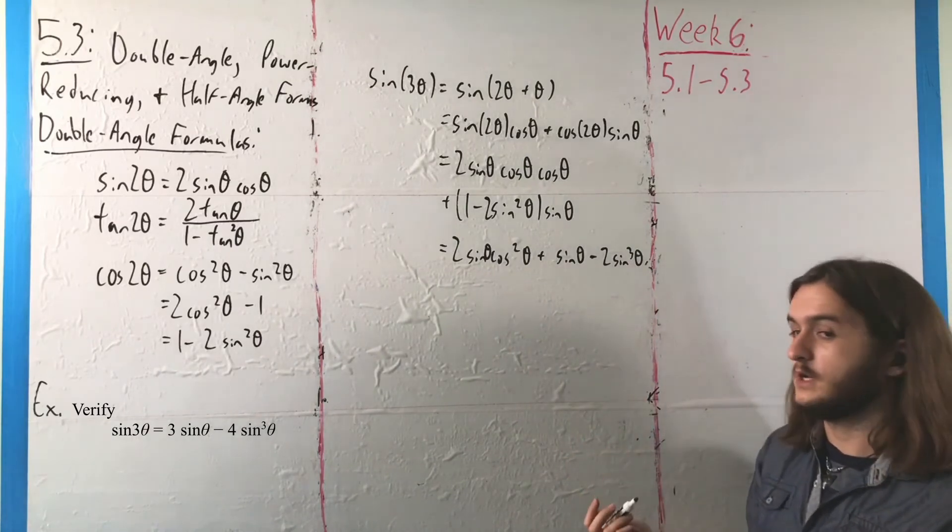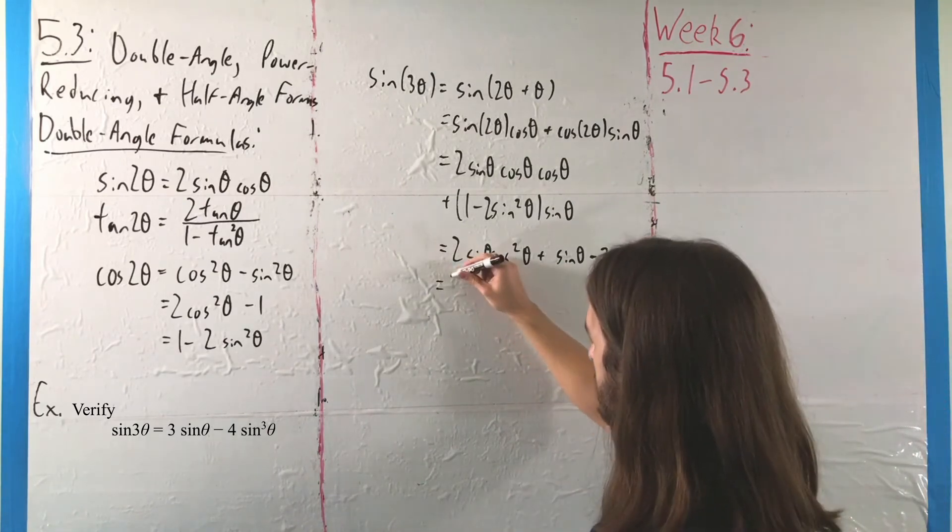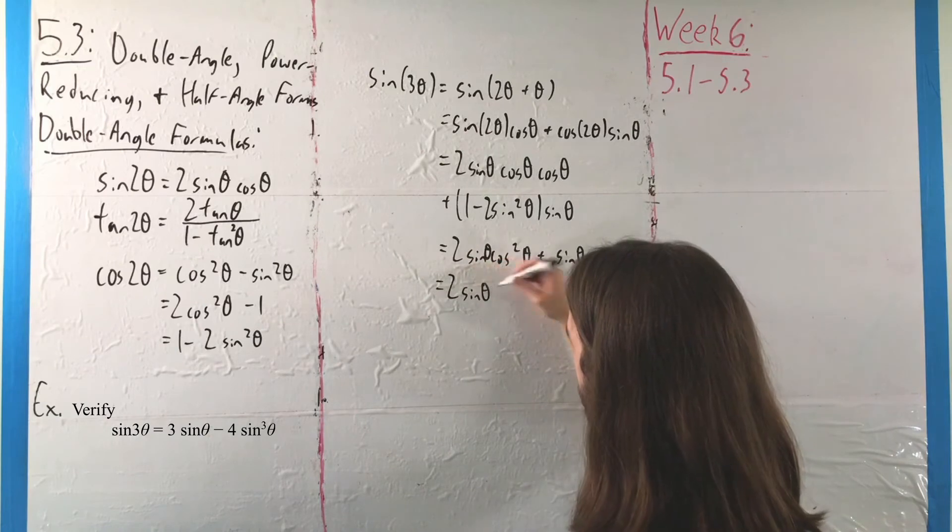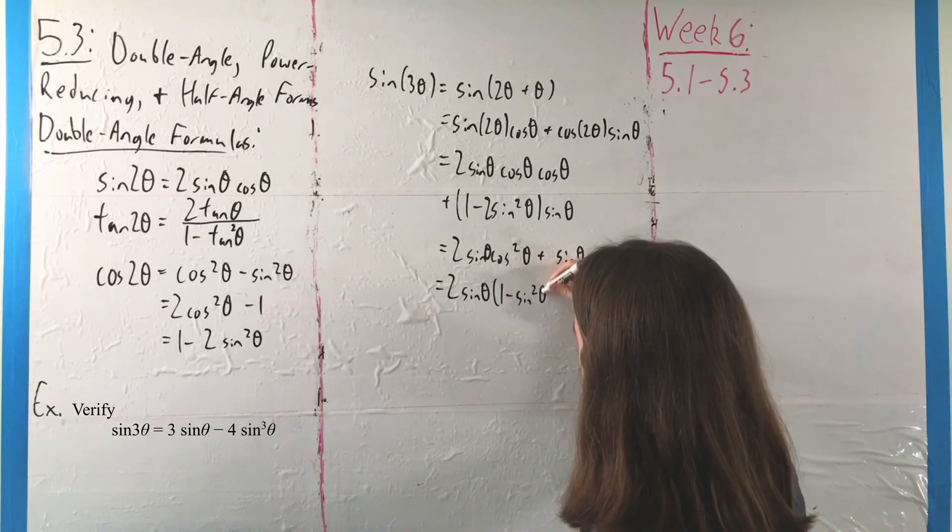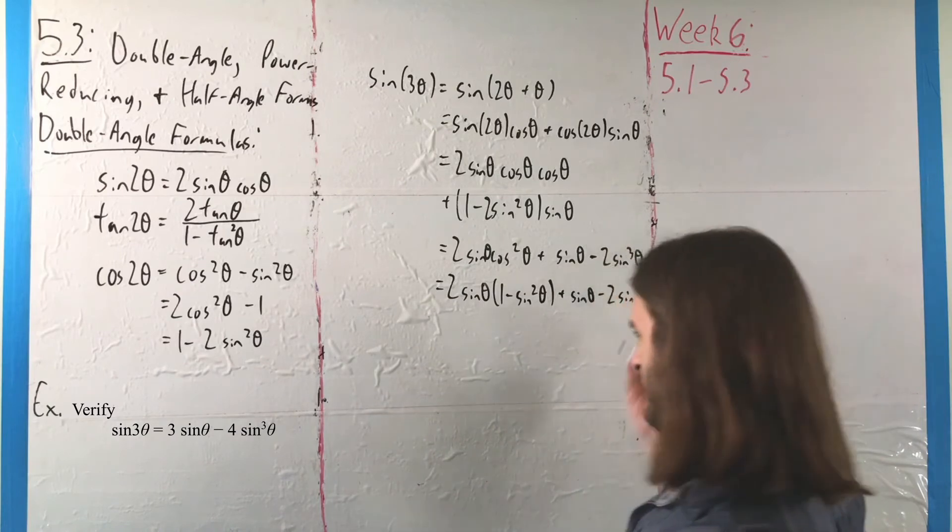Well, we can use the Pythagorean identity to get rid of that cosine where we would get 2 sine of theta times 1 minus sine squared of theta. And we still have 1 sine and 2 sine cubes we haven't done anything to yet.